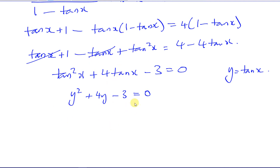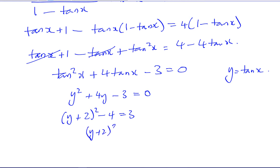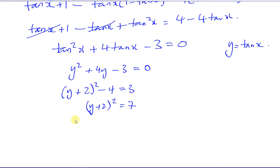What we're going to do is complete the square. We can say (y + 2)² minus 4 equals 3 — I've taken that 3 over to this side in one step. That gives y² + 4y + 4 − 4. So we have (y + 2)² = 7.